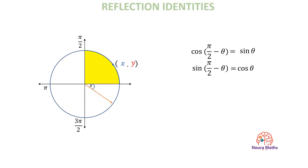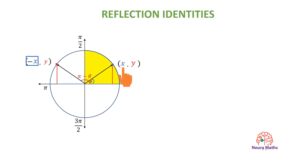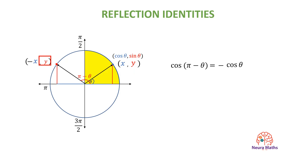Given an angle theta that corresponds to the point with x and y coordinates, when reflecting through the y-axis, the coordinates of the image would be negative x and y, and the new angle would be pi minus theta. So the cosine of pi minus theta equals negative the x-coordinate of angle theta, which is negative cosine of theta. The y-coordinate stays the same, so the sine of pi minus theta equals sine of theta.